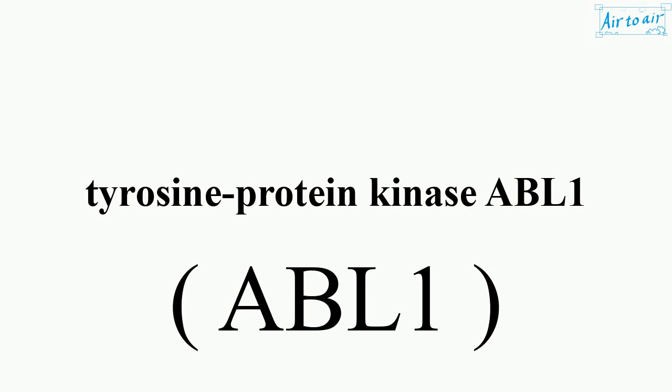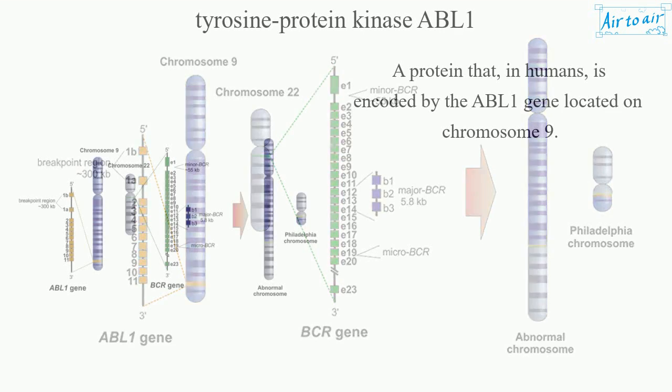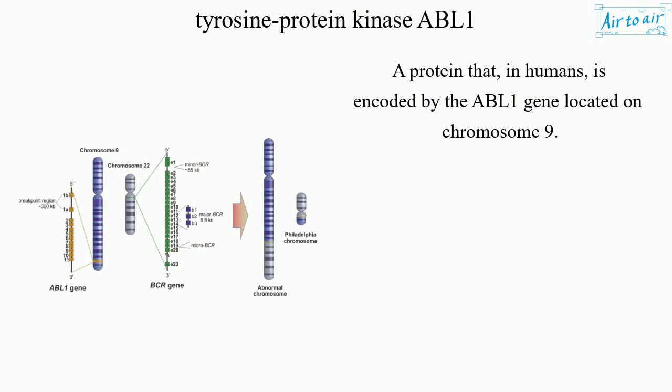Tyrosine Protein Kinase ABL1 is a protein that, in humans, is encoded by the ABL1 gene located on chromosome 9.